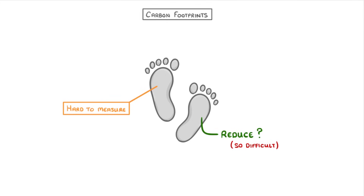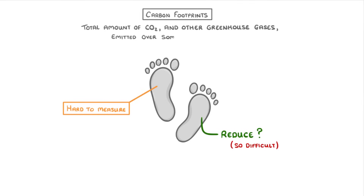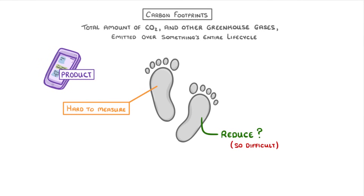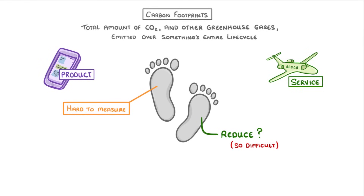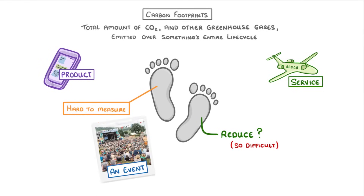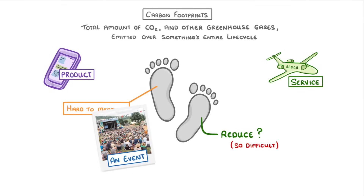When we say carbon footprints, what we're referring to is the total amount of carbon dioxide and other greenhouse gases that are emitted over something's entire life cycle, and that something could be a product like your phone, a service like plane travel, or even an event like a festival.